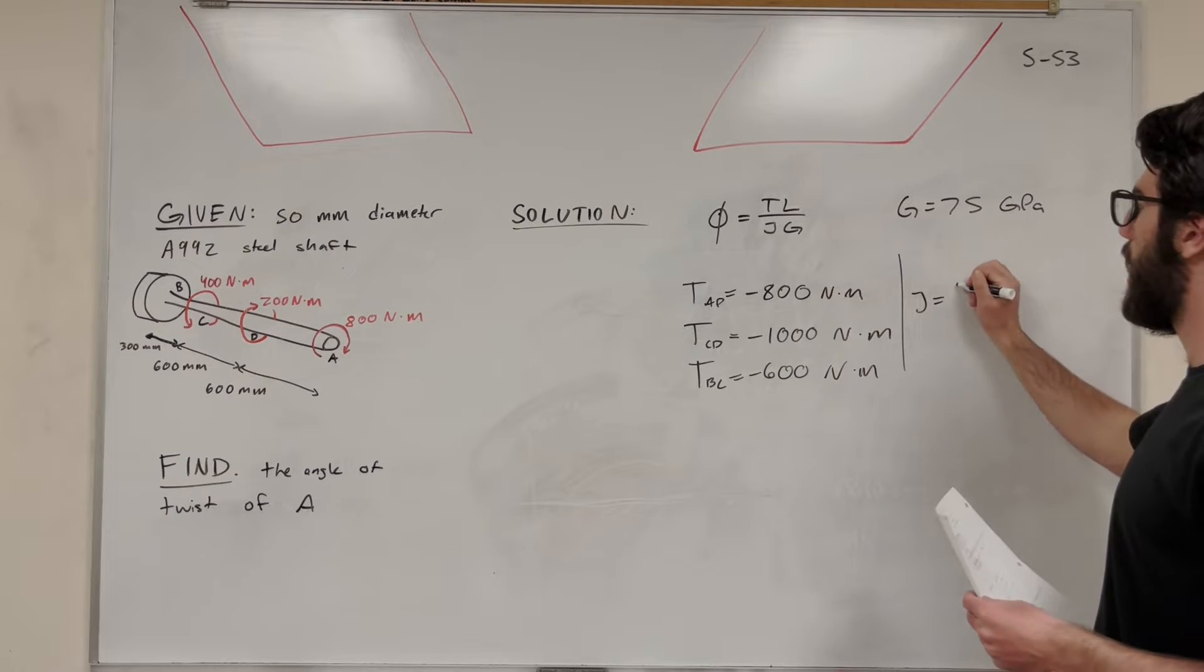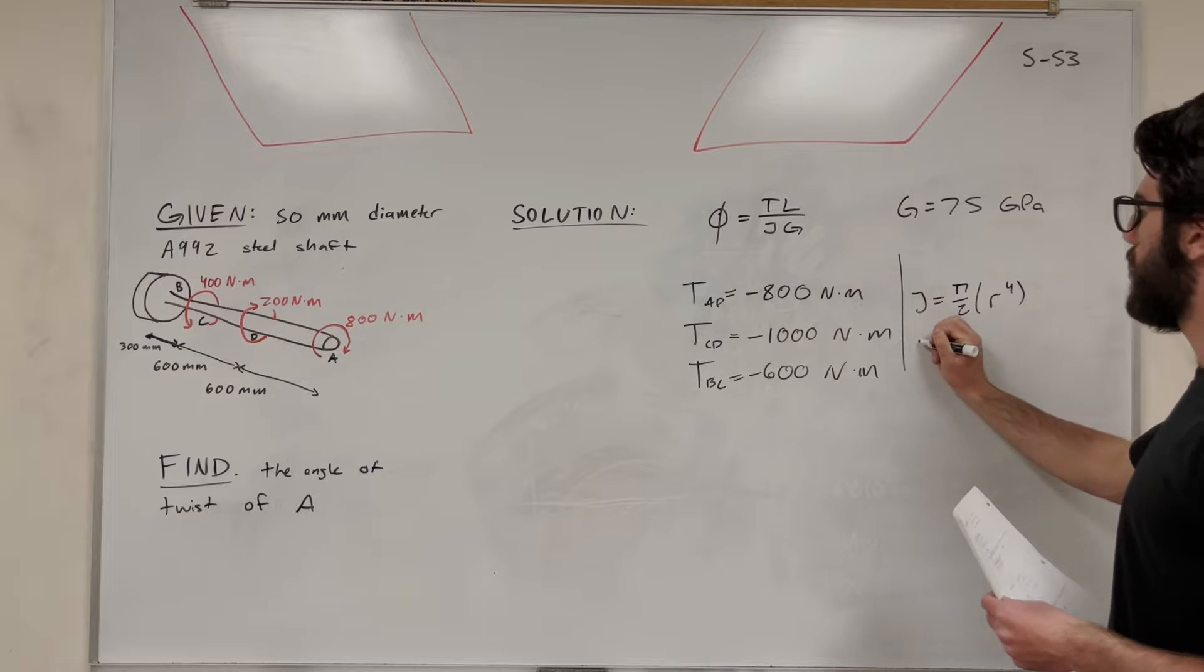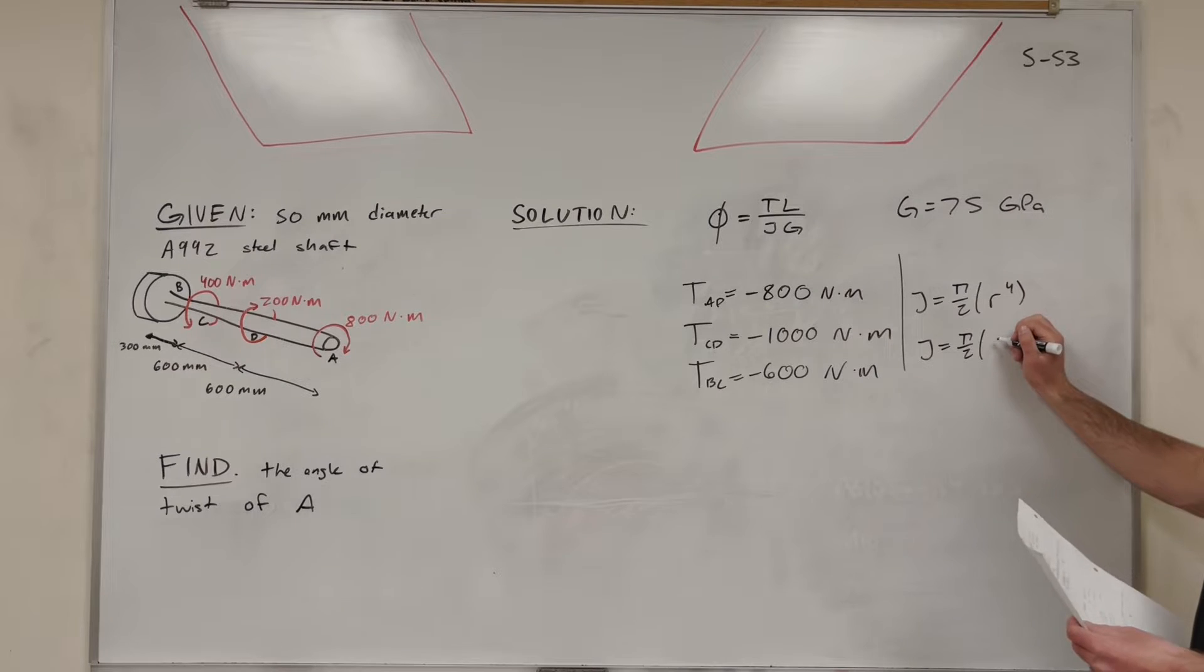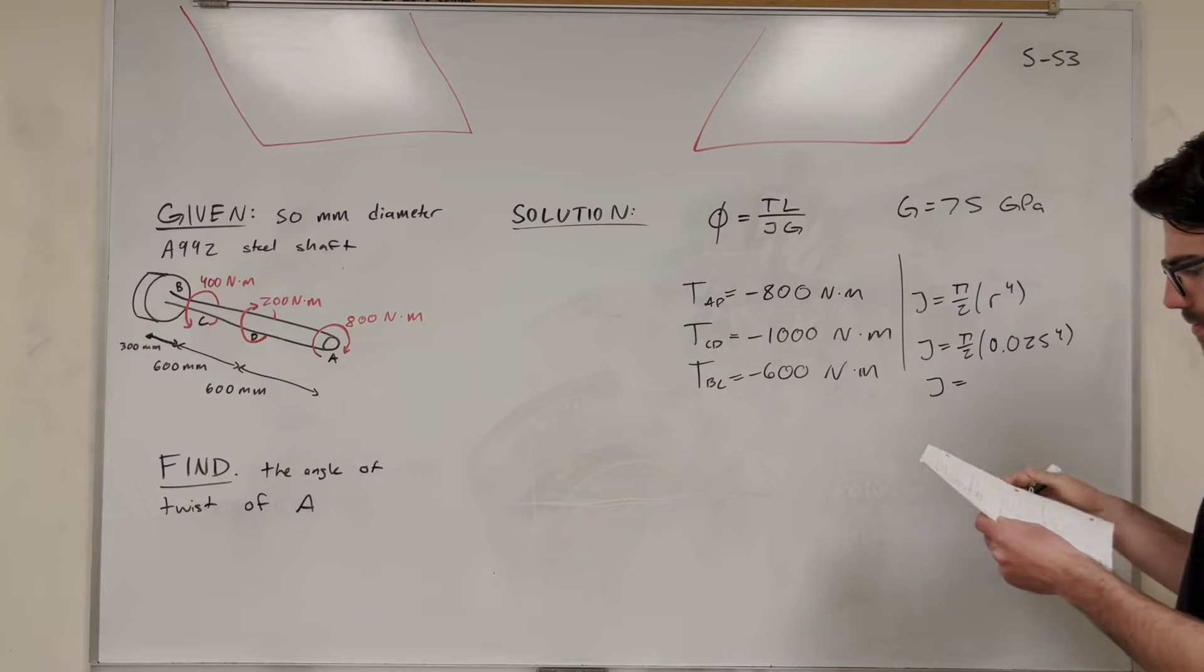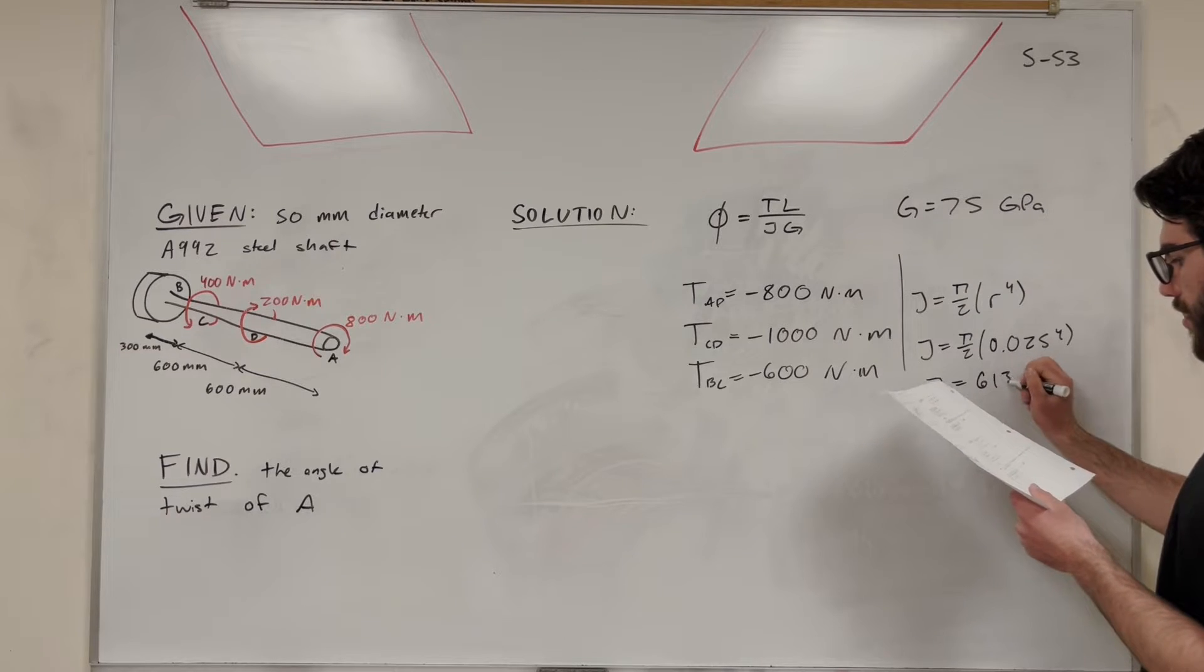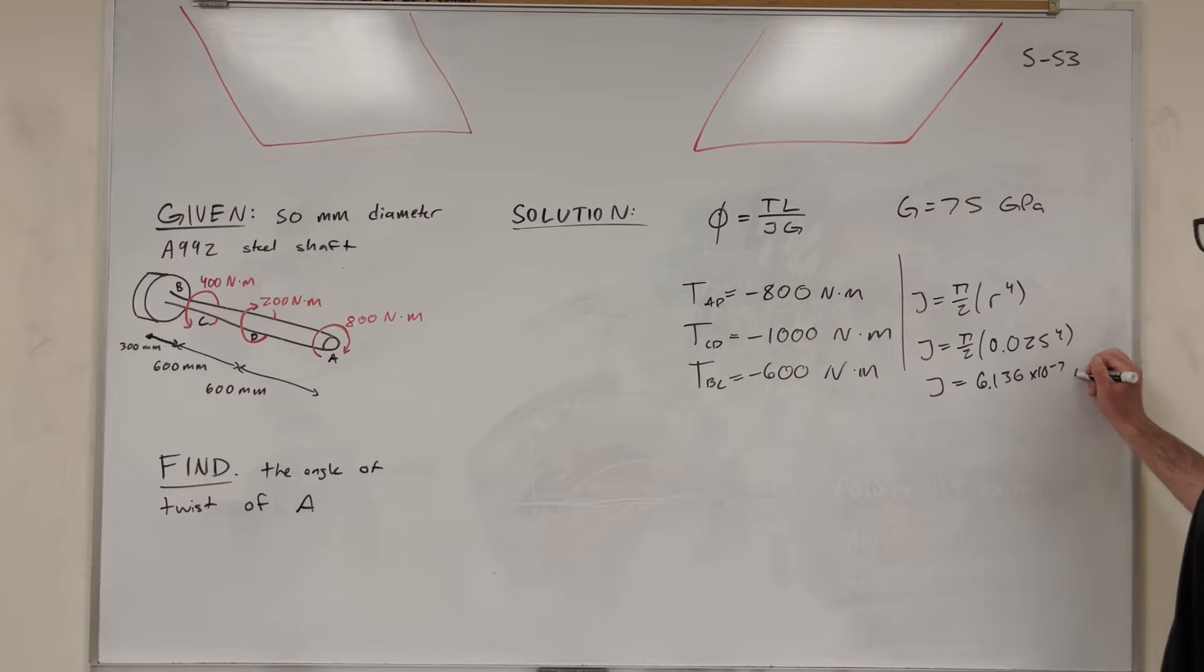So for a solid shaft, it's going to be pi over 2, radius to the 4th. So we can just go ahead and do pi over 2. Let's plug it in in the right units. So it's going to be 0.0, and then the radius is half the diameter, 25 to the 4th. You get J that's equal to 6.136 times 10 to the negative 7 meters. So now we have everything we need to solve this problem.